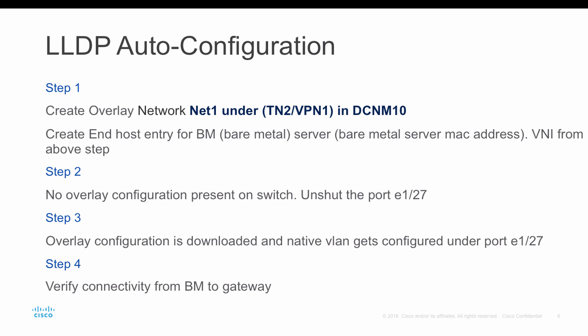This is the flow we will cover in the demonstration. We will create an overlay network for tenant 2 in DCNM 10, then create a bare metal entry for the MAC address. In step 2 we verify that there is no overlay configuration currently present.